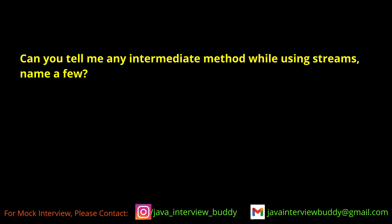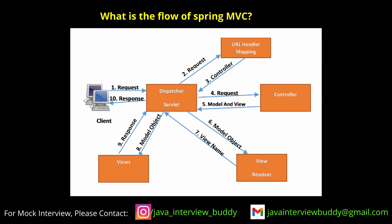Can you tell me any intermediate methods while using streams? Filter, map, and flatMap — these are the basic intermediate operations used with streams.